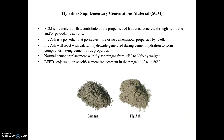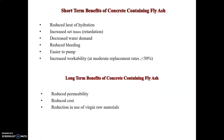Fly ash as a supplementary cementitious material: SCMs contribute to the properties of hardened concrete through hydraulic or pozzolanic activity. Fly ash is a pozzolan that possesses little or no cementitious properties by itself. Fly ash reacts with calcium hydroxide generated during cement hydration to form compounds with cementitious properties, closely resembling the setting mechanisms of normal cement. Normal cement replacement with fly ash ranges from 15% to 30% by weight. Lead projects often specify cement replacement in the range of 40% to 60%.